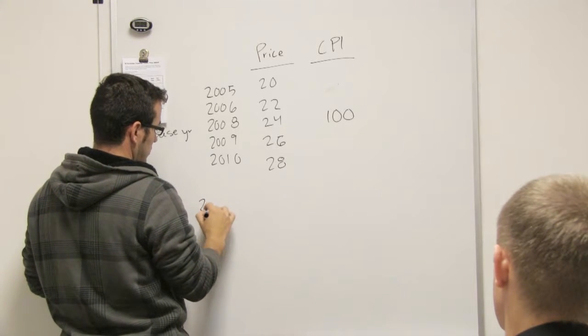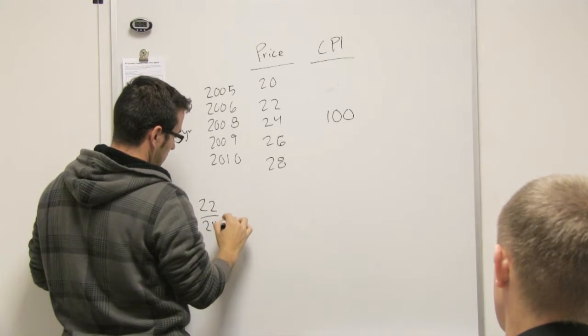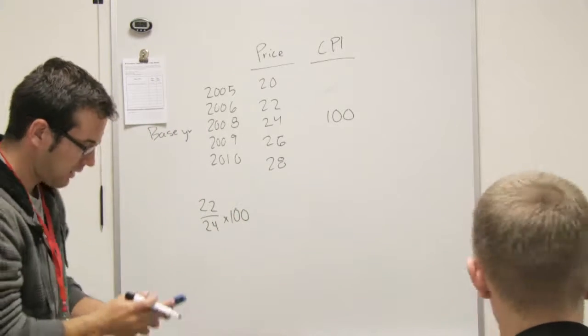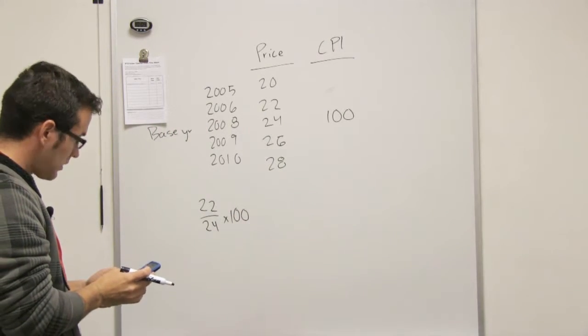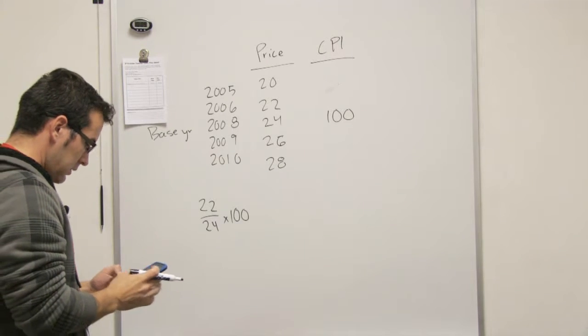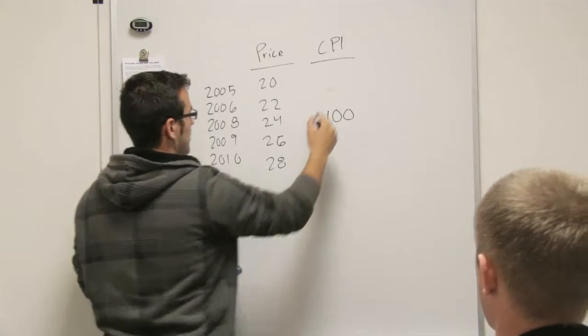And 2006, right, would be you have the current year, so 22 divided by 24 times 100, right? So that's going to be, let's see, 22... that's 91.6.